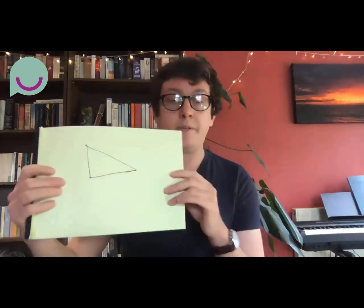Before we answer this, we have to define what we actually mean when we say things are round or flat. A flat space is one where the geometry behaves like the geometry you learn in school — where the area of a circle is π r², or the angles in a triangle add up to 180 degrees.